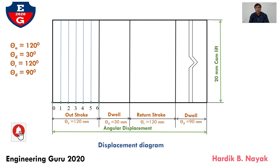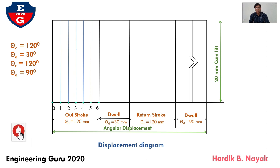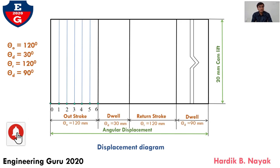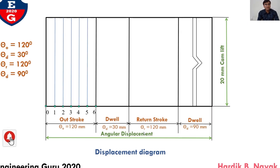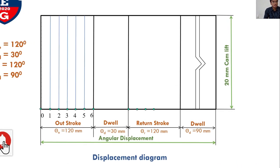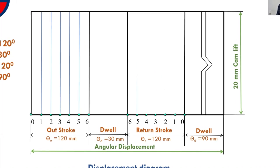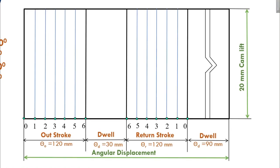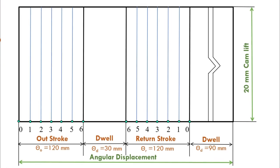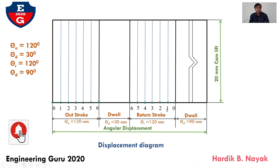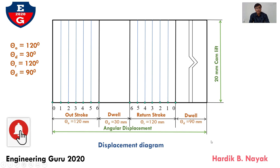After this there would be a dwell — the follower comes to rest. Taking this as 30 degrees, no need to divide because during the dwell the follower neither moves upward nor downward. After that there would be a return stroke of 120 degrees. Again divide this return stroke into 6 equal parts and draw projected vertical lines through all points. For simplicity, keep the same notation in reverse order: 6, 5, 4, 3, 2 and 0. After the return stroke the final dwell is 90 degrees.